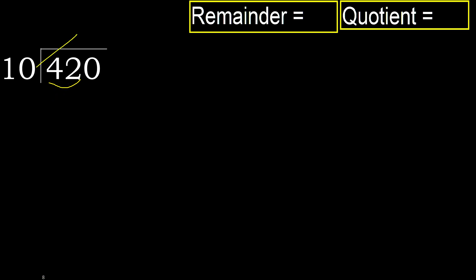10 — multiply by which number is nearest to 42 but not greater. Multiply by 5: 50 is greater. Multiply by 4: 40 is not greater. Subtract: 42 minus 40 is 2.